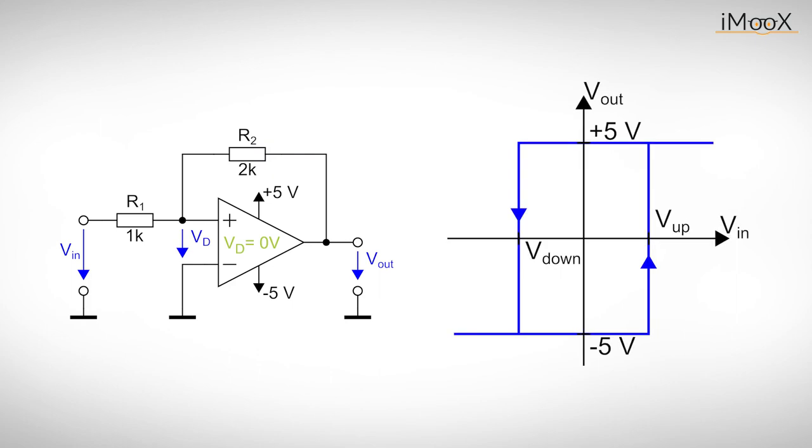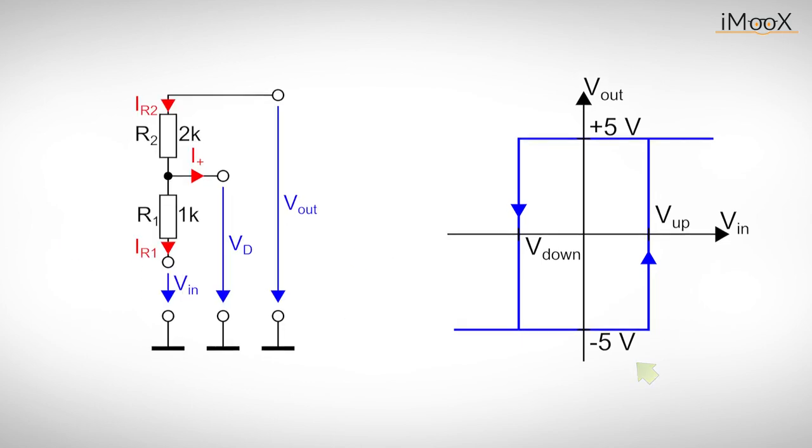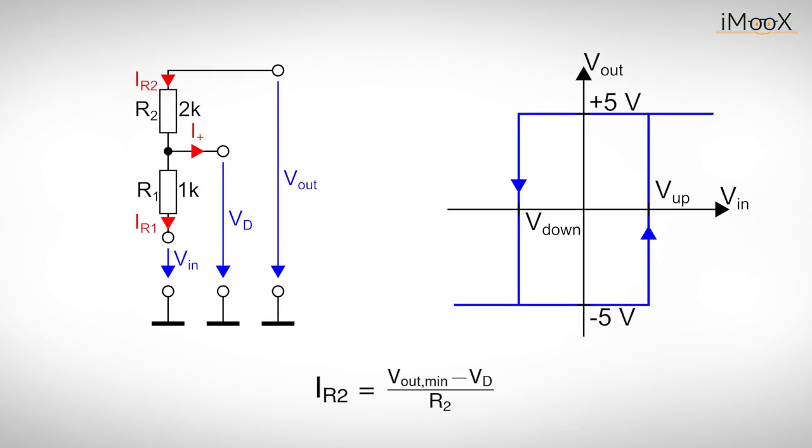Back to our example. We require Vd to be 0 volts to toggle the output of our Schmitt trigger. We also know that the output voltage is currently minus 5 volts. The rest is just a simple resistor circuit. The current IR2 equals Voutmin minus Vd divided by R2. As Vd is 0 volts at the trigger point, we can simplify the equation. As the current into the non-inverting input is a property of the operational amplifier, I plus equals 0 amps is still valid. Thus the currents through the resistors are equal and we can determine the voltage drop at R1 by this expression. Thus we get this equation for the trigger level.